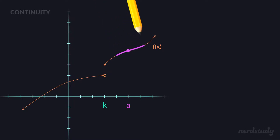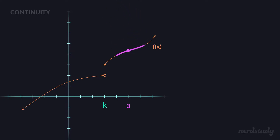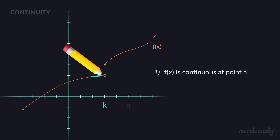Think of it as striking a line through that point without having to lift your pencil off the paper. So if you can do that, then you would see that as a continuous graph. For example, for this graph at point A, notice how we can strike a line right through that point, and immediately you would be able to know that this is in fact continuous at point A.